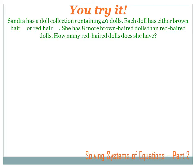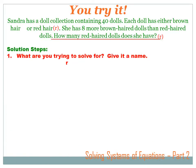Let's attack this question systematically. We're going to CUCC it — circle the numbers, underline the question, and work through it in the systematic way we talked about before. First step: what are we trying to solve for and give it a name? That's the underlined part of CUCC. I underline 'how many red-haired dolls does she have?' and let's call that R for red-haired dolls. We're trying to solve for R, the number of red-haired dolls.